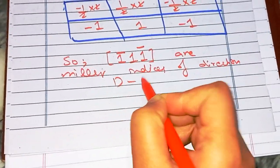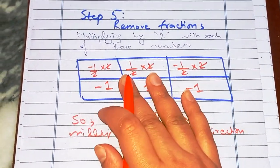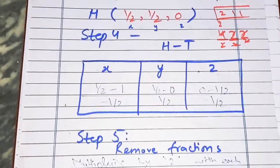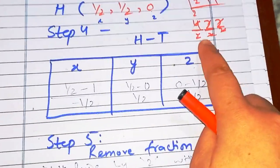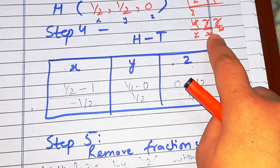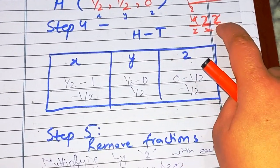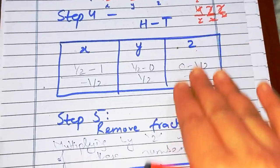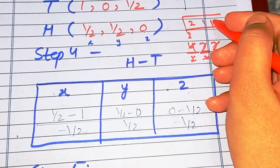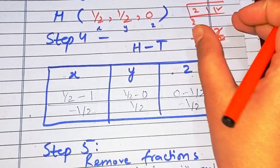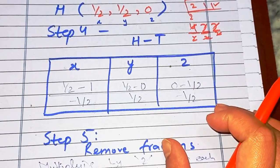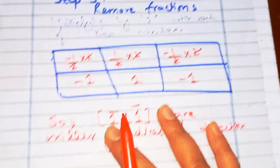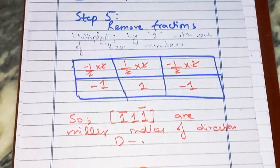That is it for this video. We have successfully calculated the Miller indices of all the directions in this problem. Remember, for least integer form, keep dividing all numbers by a common integer until further division is not possible. Goodbye, take care.